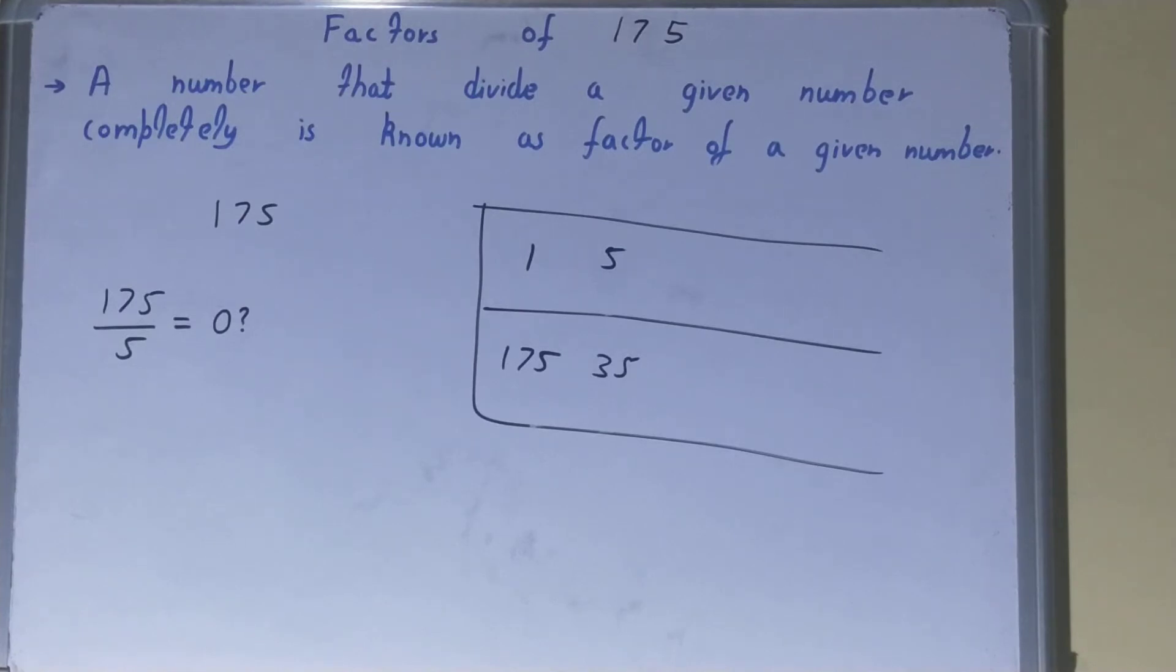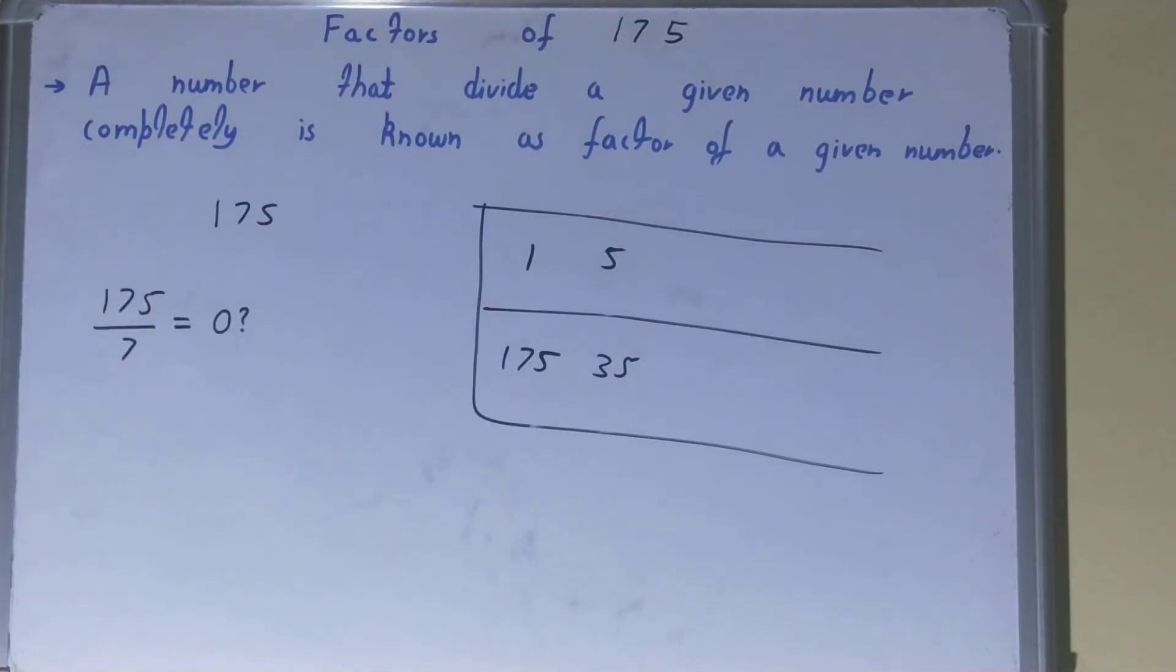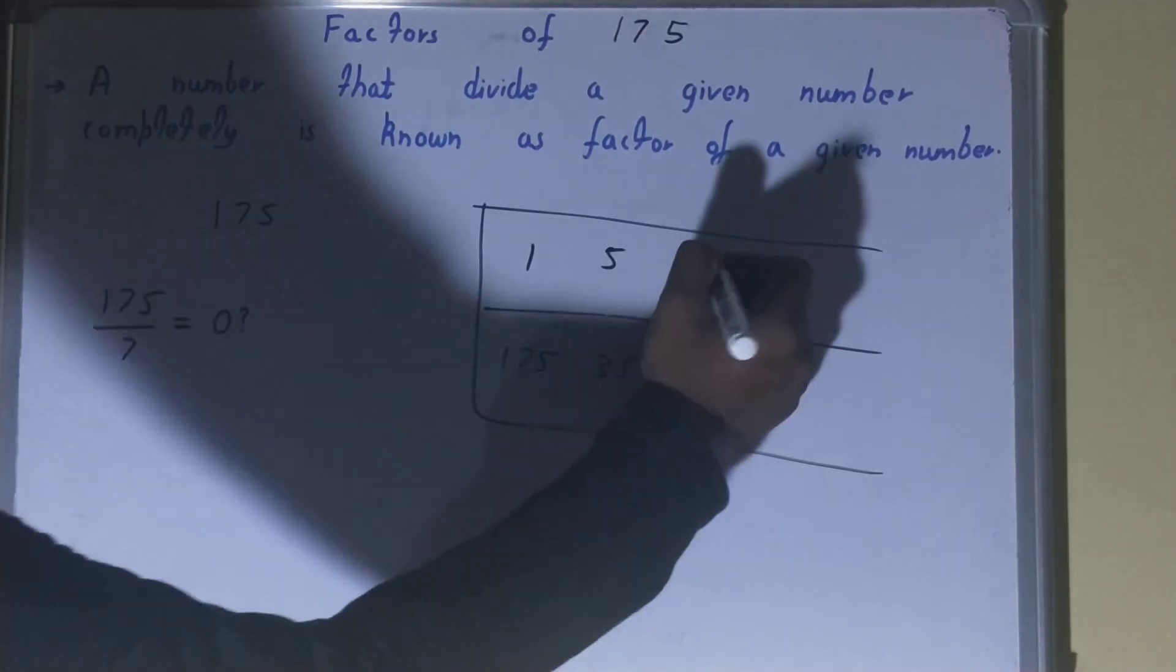After 5 comes 6. 6 is even, so just ignore it. We'll check with 7. 7 times 2 is 14, 7 times 2 is 14, 3 times 5... yes, it is divisible by 7. So 7 is a factor, and it will be 25 times.